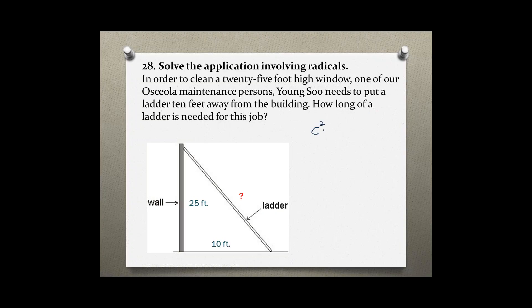c squared equals a squared plus b squared, where a and b are just the two sides of the triangle, but c is always the hypotenuse and the hypotenuse is across the 90-degree angle. So, if the 90-degree angle is here, this would be the hypotenuse.